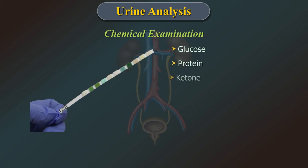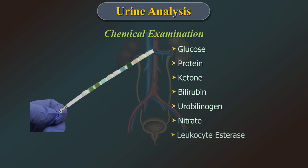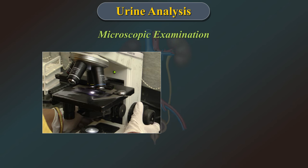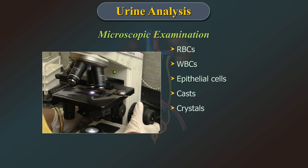proteins, ketones, bilirubin, urobilinogen, nitrate, leukocyte esterase, pH and blood. Microscopic examination of urine for cells like red blood cells, white blood cells, epithelial cells, casts, crystals, bacteria, yeast and parasites.